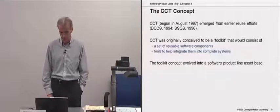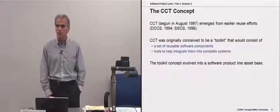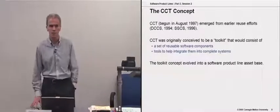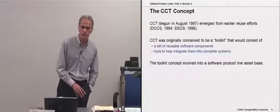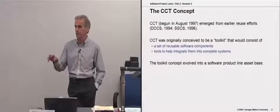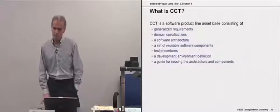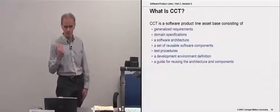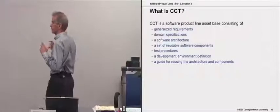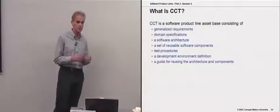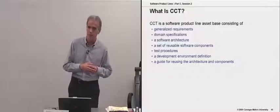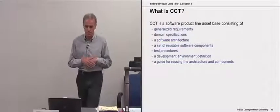The NRO brought in the SEI as advisors, and one of the first influences the SEI had was changing the mindset away from the toolkit idea — making clear that you really need an architecture supporting this. You can't just have a set of components and hope they all work together. So what CCT ended up producing included generalized requirements and domain specifications, tied to what we would now call the practice area of understanding relevant domains and doing commonality and variability analysis, and looking at both functional and quality attributes that would influence the architecture.